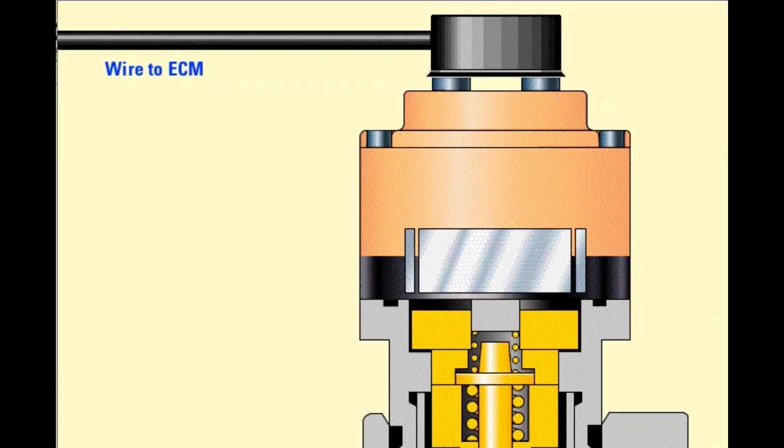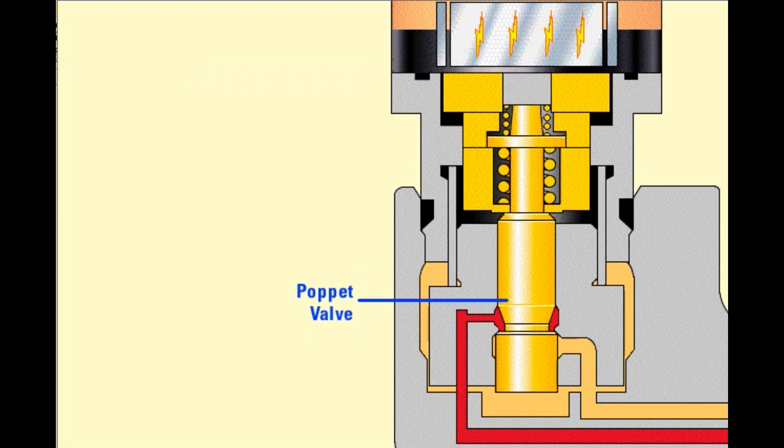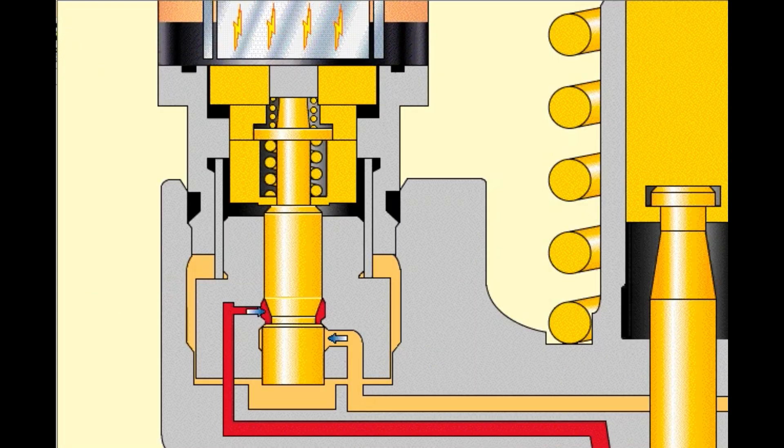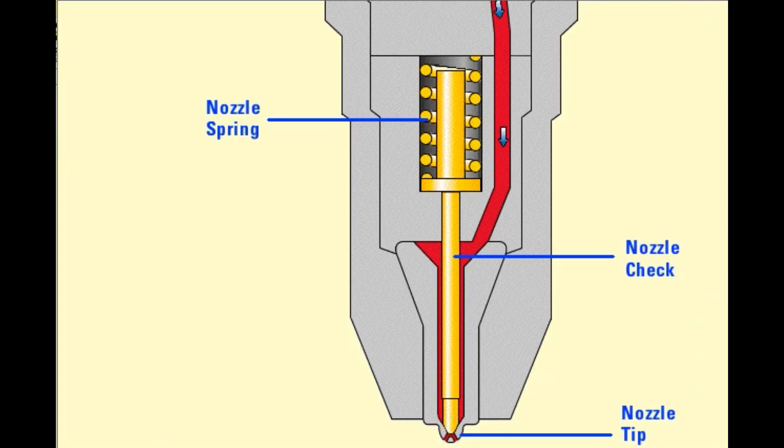When injection is desired, the ECM sends a current to the solenoid on the cartridge valve. The current creates a magnetic field causing the poppet to close. Fuel flow past the poppet is blocked and pressure begins to build from the poppet through the plunger cavity to the nozzle check.